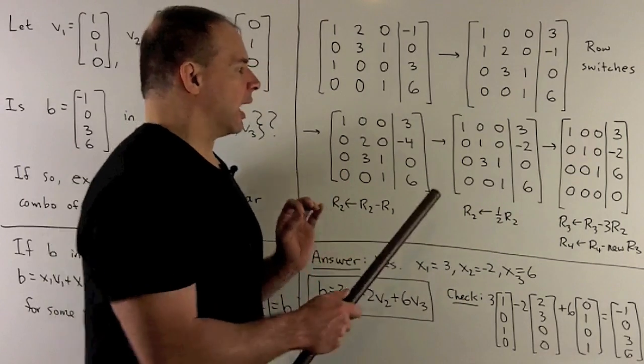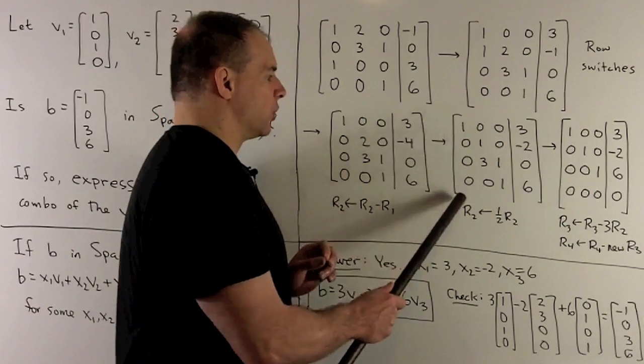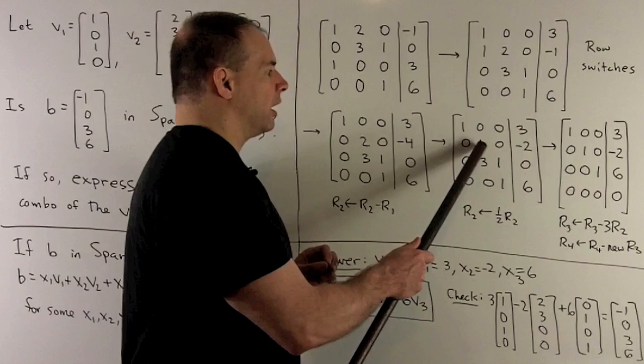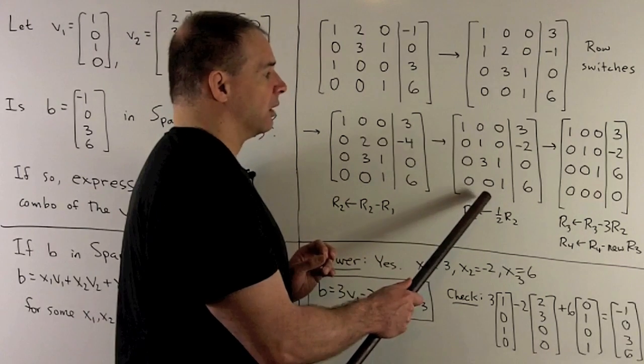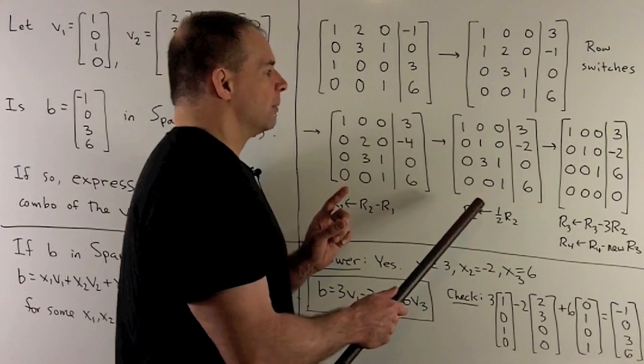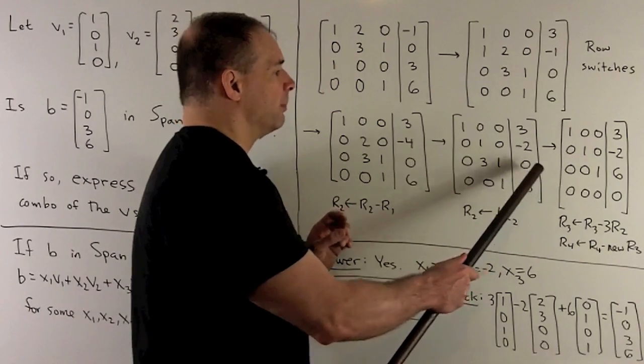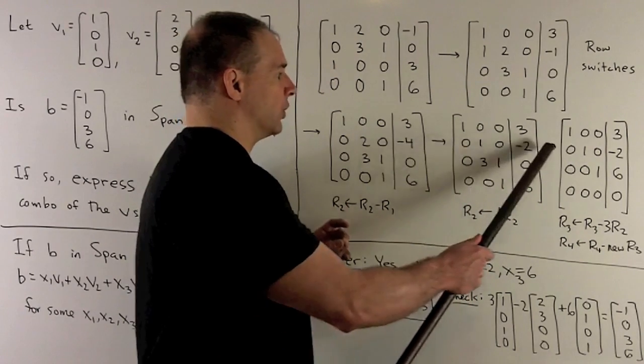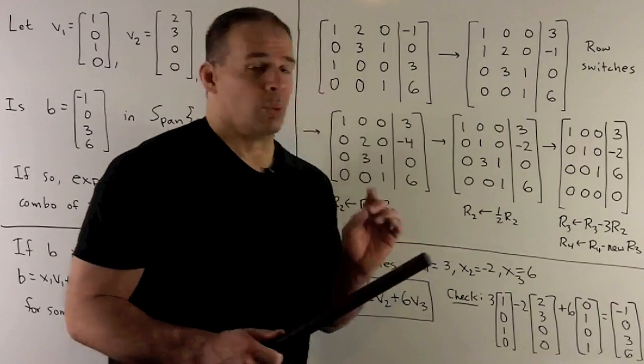Then, we have 1, all zeros beneath. We have another 1 here on the diagonal, and I want all zeros beneath. So our next move is to get rid of the 3. So what we'll do is, we'll take row 3, subtract off 3 times row 2.